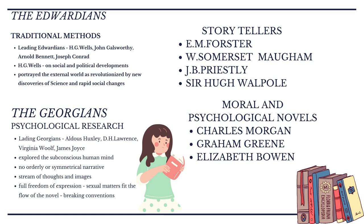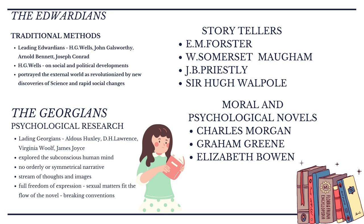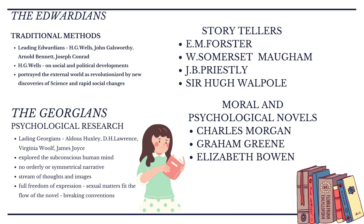Then come the Georgians, who depend on psychological research. The leading Georgians are Aldous Huxley, D.H. Lawrence, Virginia Woolf, and James Joyce. They explore the subconscious human mind and don't have any orderly or symmetrical narrative. Stream of thoughts and images cloud their plot, and they have full freedom of expression. Sexual matters feature in their novels, and they break conventions — no more traditional practices.